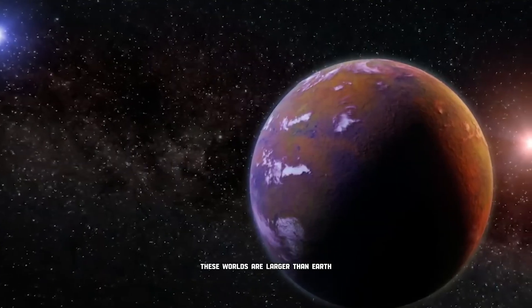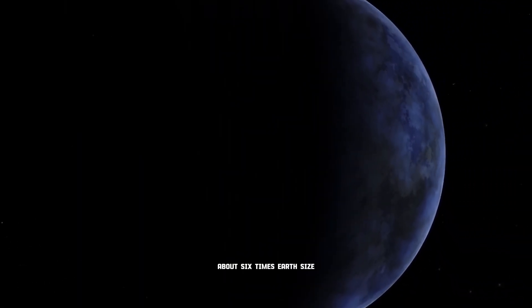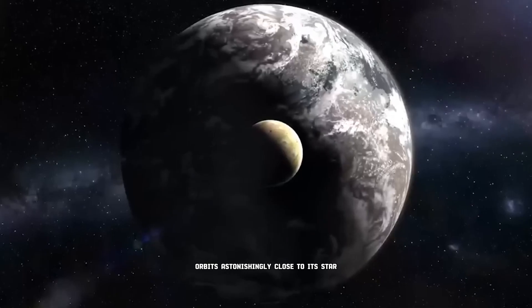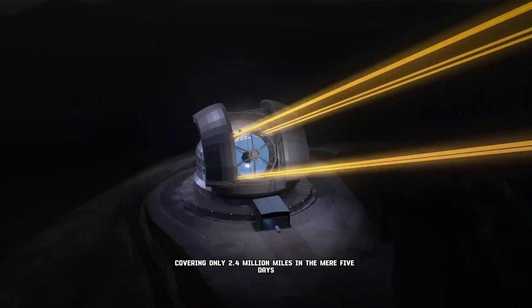These worlds are larger than Earth but smaller than Neptune. Proxima C, about 6 times Earth's size, orbits astonishingly close to its star, covering only 2.4 million miles in a mere 5 days.